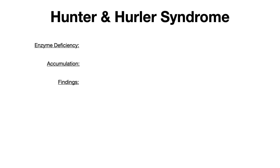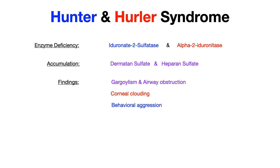Hunter and Hurler syndrome share a lot and will be covered together, color-coded: blue for Hunter, red for Hurler, purple for shared features. Hunter's enzyme deficiency is iduronate-2-sulfatase; Hurler's is alpha-L-iduronidase — similar sounding, but subtly different. Both syndromes share the same accumulating substrates: dermatan sulfate and heparan sulfate.